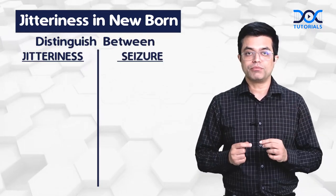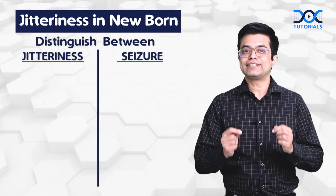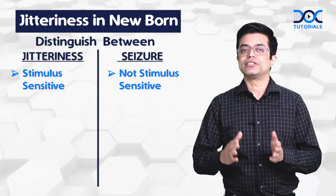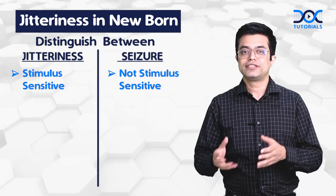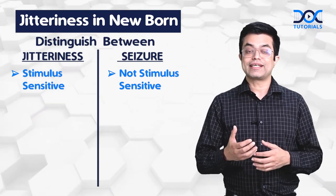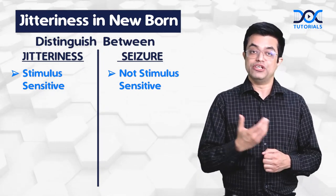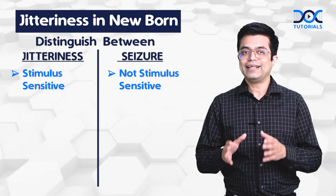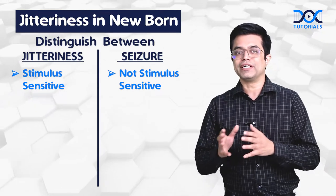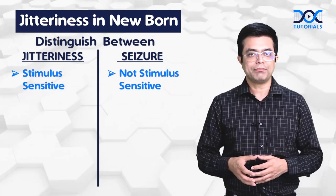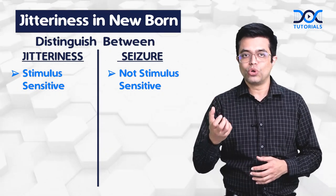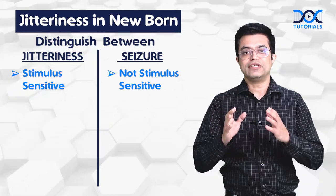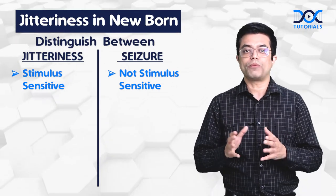Number one and most important point, jitteriness is stimulus sensitive while seizures are not. Stimulus sensitive means jitteriness can sometimes be initiated by a stimulus and it can be stopped by a stimulus. For example, a child is having jitteriness, you hold the hand firmly, you flex the hand, the jitteriness may stop.